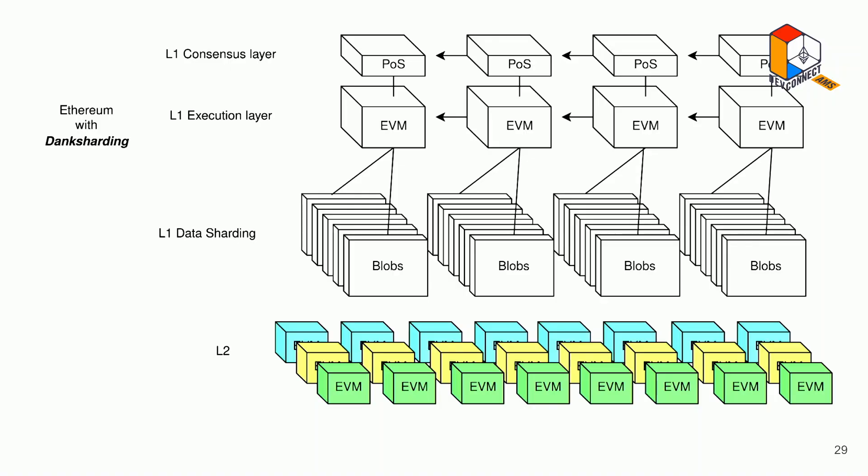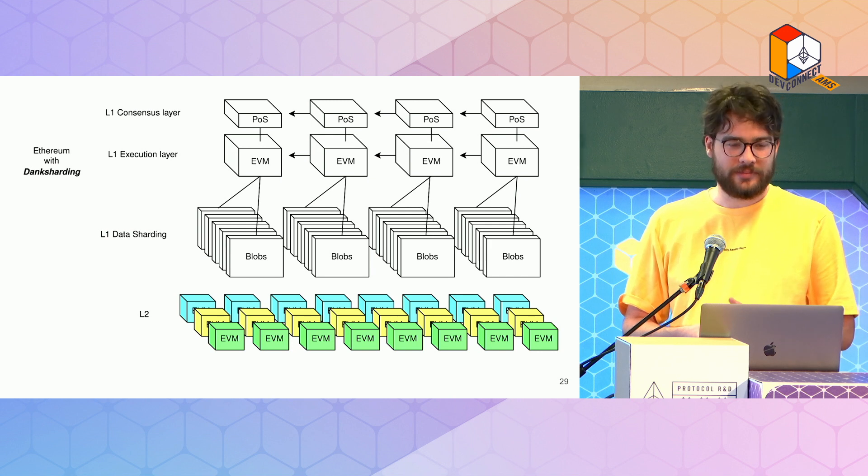After EIP 4844, no more changes to the execution layer — the consensus layer can take it from there. The end state is: proof of stake, the EVM on layer 1, blob data, and a massive layer 2 ecosystem.